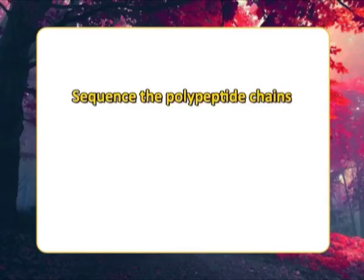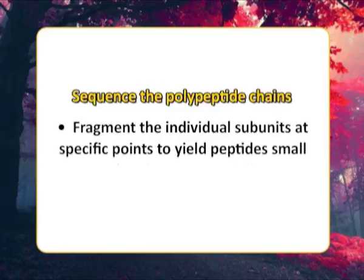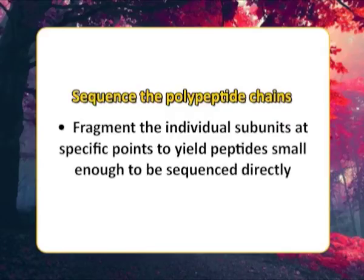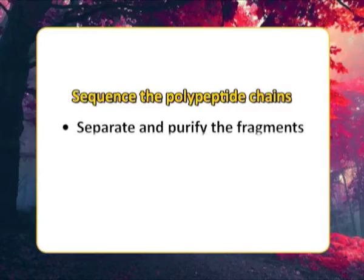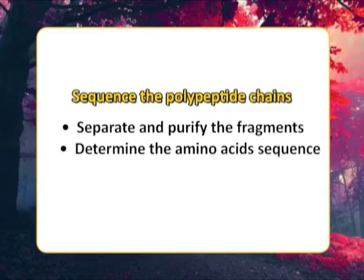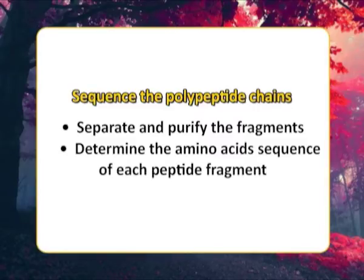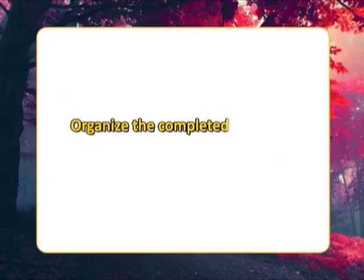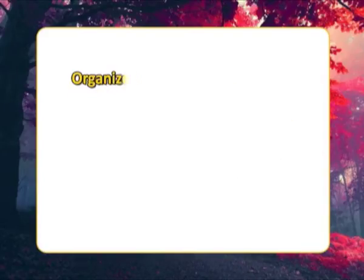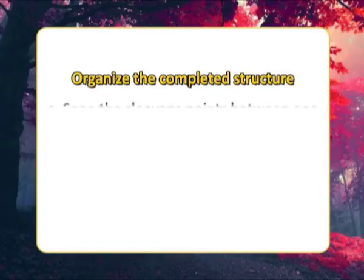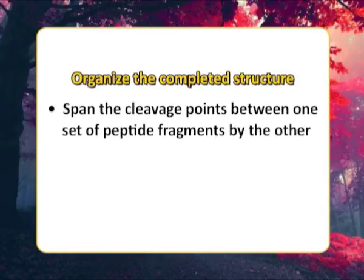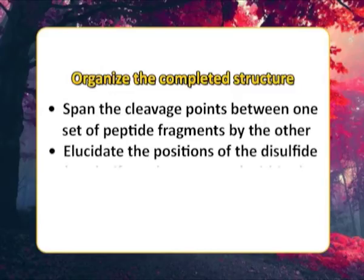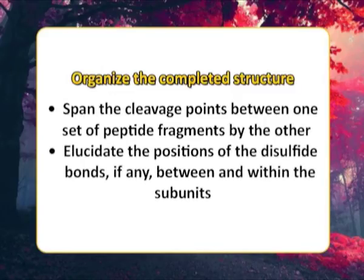Fragment the individual subunits at specific points to yield peptides small enough to be sequenced directly. Separate and purify the fragments, determine the amino acid sequence of each peptide fragment, organize the complete structure by spanning the cleavage points between one set of peptide fragments by the other, and elucidate the positions of the disulfide bonds, if any, between and within the subunits.